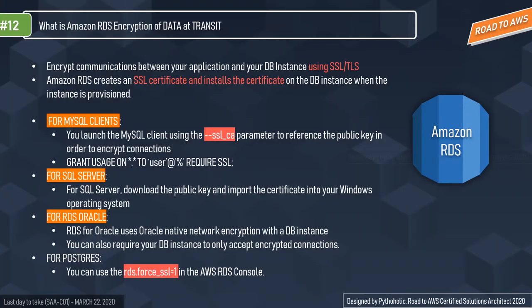Data in motion is often considered less secure and vulnerable. It refers to data traveling from network to network or data transferred from local storage to cloud storage — essentially data currently in use. For this type of data, RDS provides a mechanism that encrypts communication between your application and your DB instance using SSL or TLS.